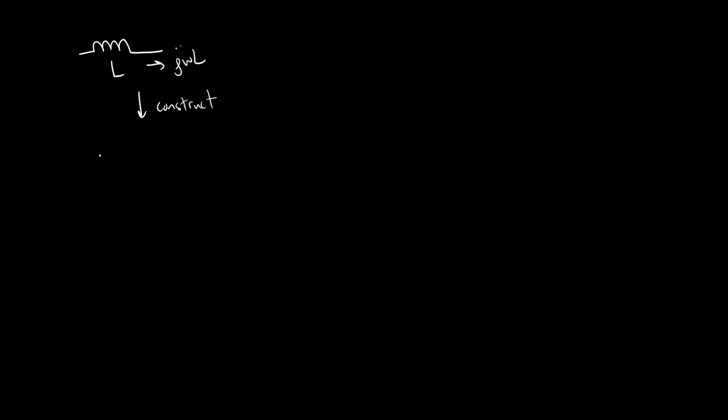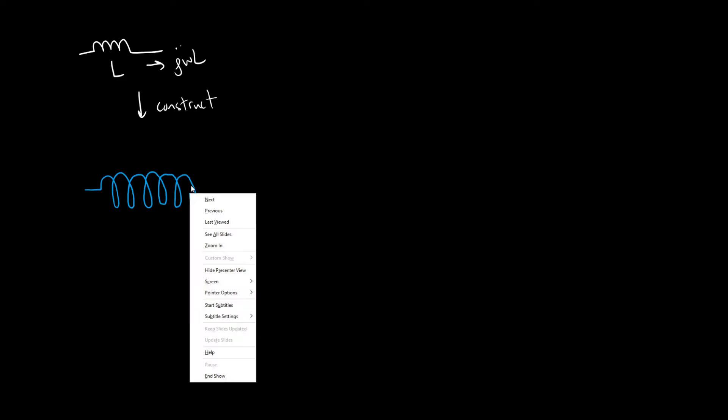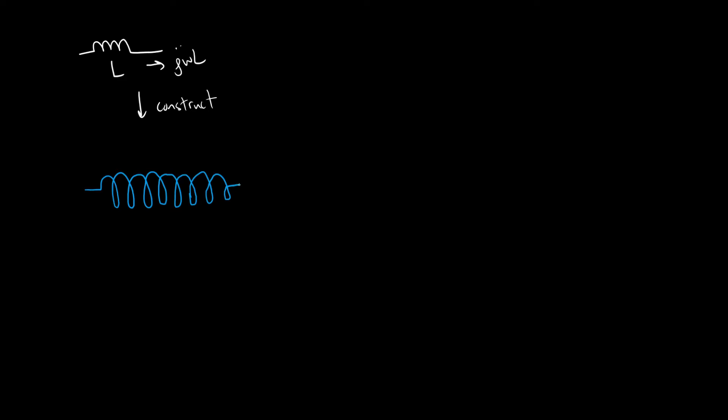When you build it, you end up getting some non-idealities, some parasitics. The first thing we think about is really a solenoid — a coil, many loops of wire. Really anything can be an inductor, but if you want to control the inductance, you construct it in a particular way. Each loop of wire contributes some field on the interior, and the more field, the more energy you can store in magnetic fields — basically, the more inductance you have.